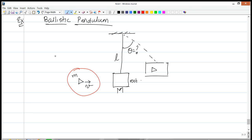Now what's going to happen is that the bullet is going to get embedded in the block. And then once it gets embedded, the block bullet is going to swing up. And our goal is to figure out the maximum angle theta that the block bullet system will make.